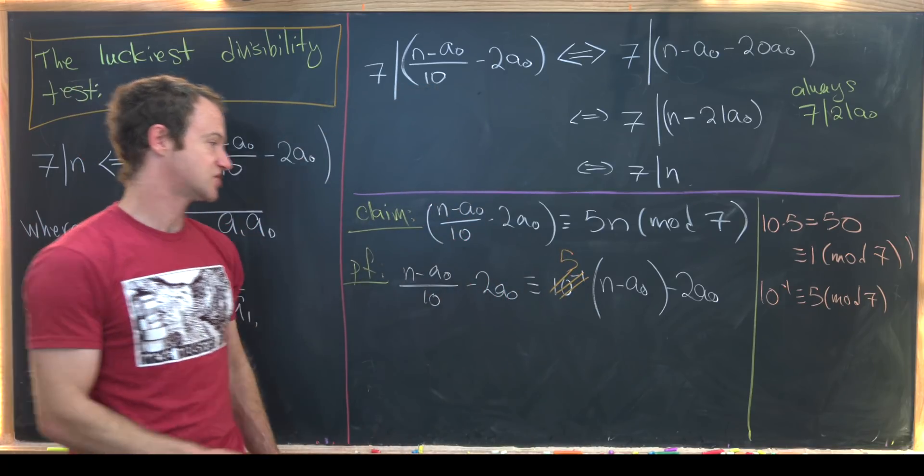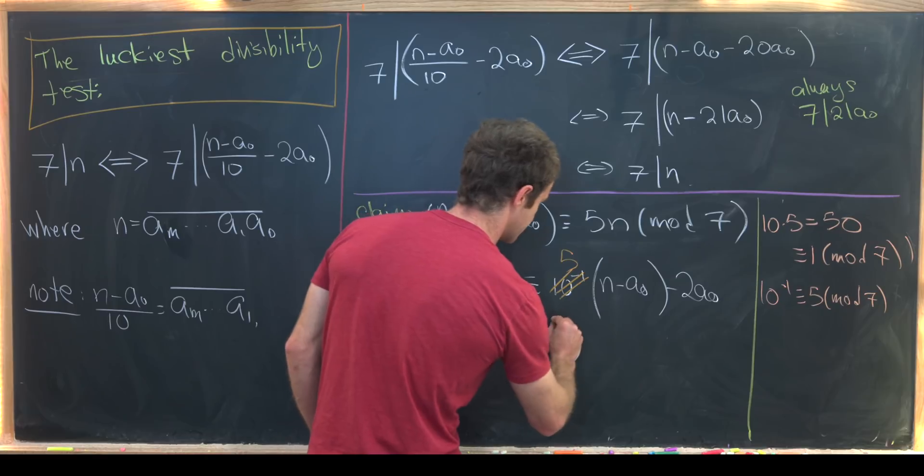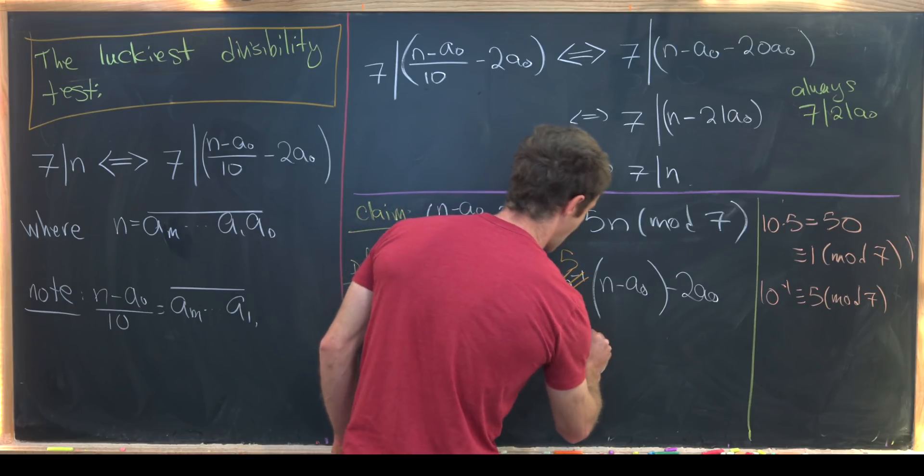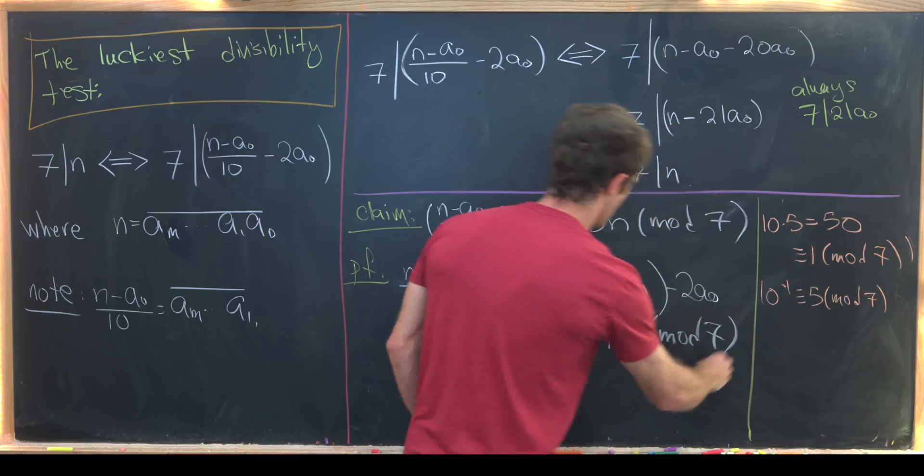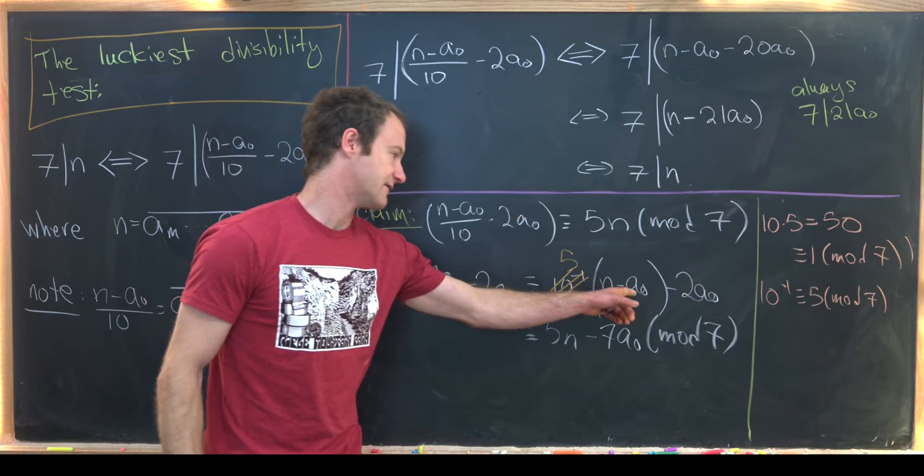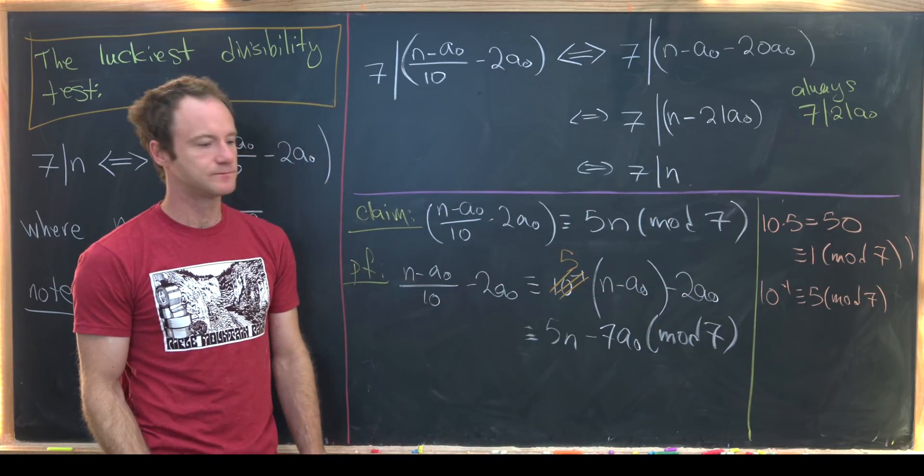And now we're essentially done. So notice this is congruent to 5n minus 7a naught mod 7, where I got the 7 by negative 5a naught minus 2a naught. Okay cool.